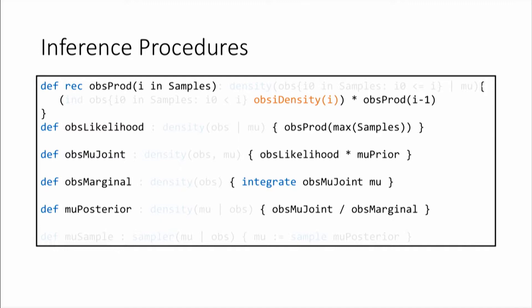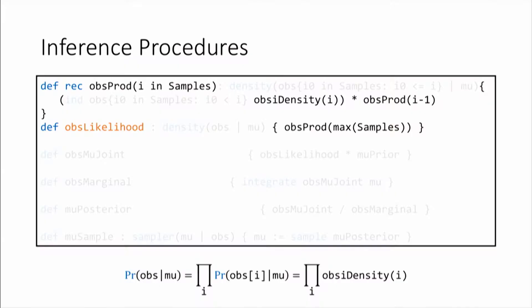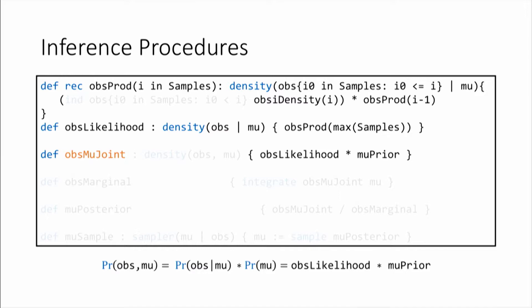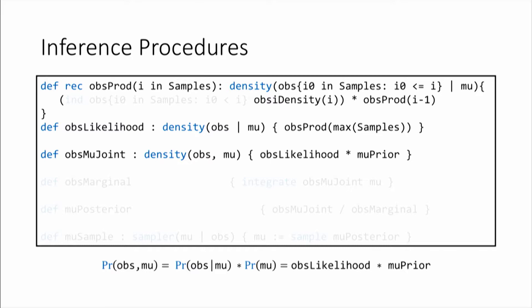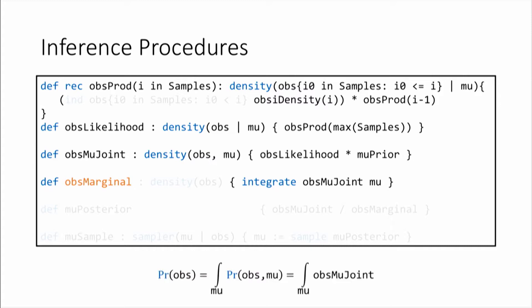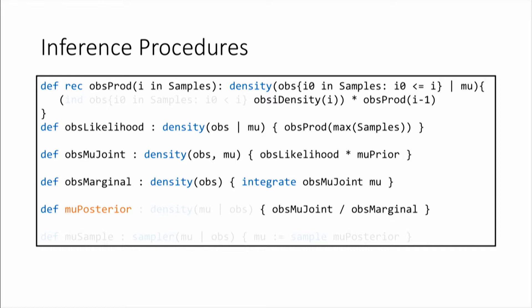All of these start from densities in the model. The obs_likelihood takes the product of obs density across all i — the rules of probability say this gives obs conditioned on mu, which is exactly what its type expresses. The obs_joint multiplies obs_likelihood by mu_prior, yielding the joint distribution of obs and mu. The obs_marginal integrates the joint with respect to mu, giving the distribution of obs alone. Finally, the mu_posterior divides obs_joint by obs_marginal — Bayes' rule tells us this gives the distribution of mu conditioned on obs, exactly what the type says.